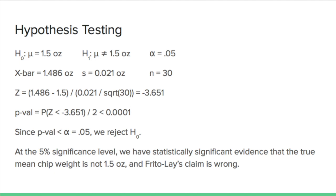And note that it is a two-tailed test. And so we divided the probability by 2. And since the p-value was less than the alpha level of 0.05, we reject the null. At the 5% significance level, we have statistically significant evidence that the true mean chip weight in Lay's chips is not 1.5 ounces. And Frito-Lay's claim is wrong.